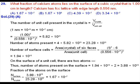First, we will find out the number of unit cells present in the crystal, given as volume of crystal divided by volume of unit cell. The volume of crystal is 1 cm³ and the volume of unit cell is the cube of the lattice parameter. So the ratio is 1 divided by (0.556 × 10⁻⁷)³, giving 5.82 × 10²¹ unit cells.